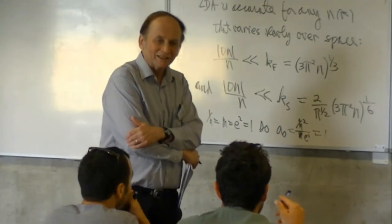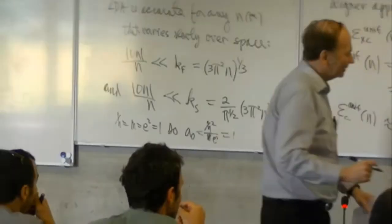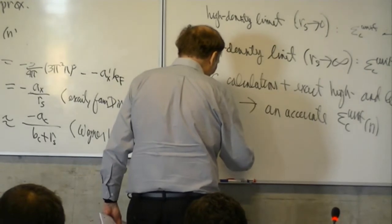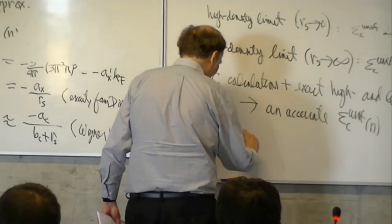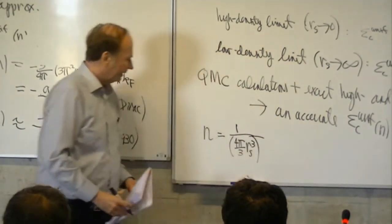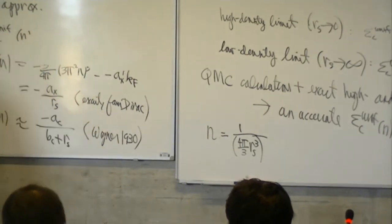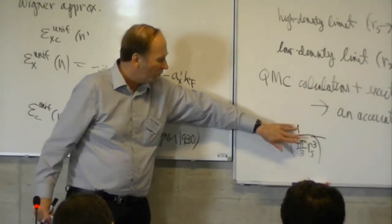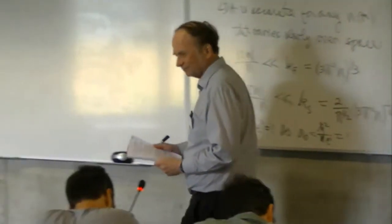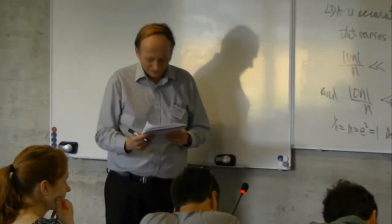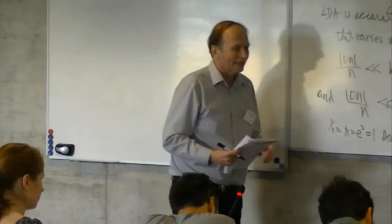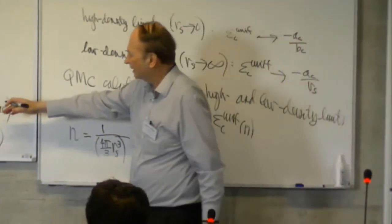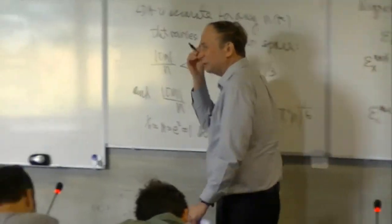R_S is related to density: the average density is 1 over the volume of a sphere of radius R_S, so 4π R_S³/3 times n equals 1. If you know the density, you know R_S — it's another way of carrying the same information. R_S is the radius of a sphere that on average has one electron in it.